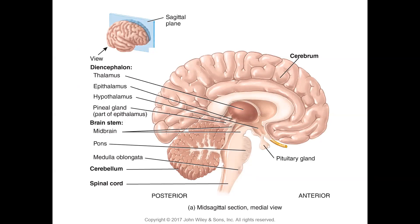The brain is mainly made up of four regions: the cerebellum, the diencephalon, the cerebrum, and the brain stem. Going up from the spinal cord, the first part we encounter is the brain stem, which consists of three parts: the medulla oblongata, the pons, and the midbrain. The cerebellum lies posterior to the midbrain and inferior to the cerebrum. The diencephalon consists of the thalamus, the epithalamus, and the hypothalamus.